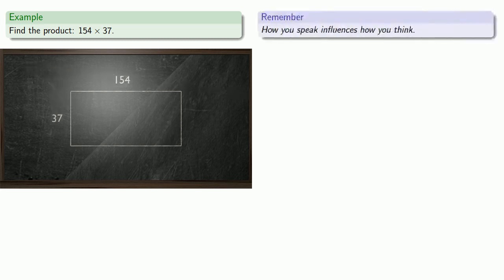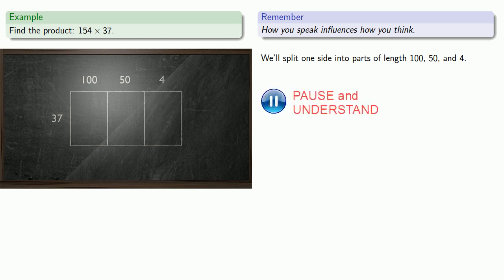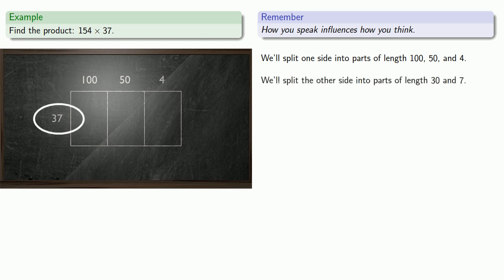Again, how you speak influences how you think. One side is 154. So we'll split one side into parts of length 150 and 4. The other side, 37, will split the other side into parts of length 30 and 7. And this gives us the areas of six smaller rectangles to compute.